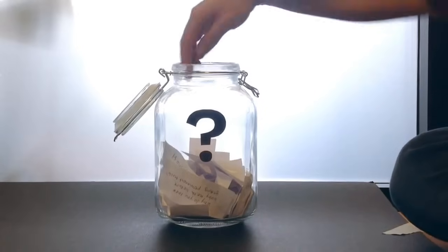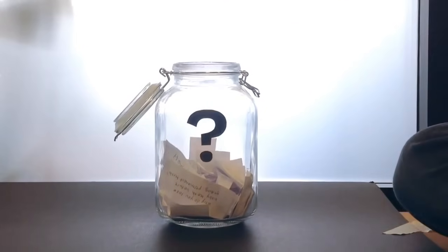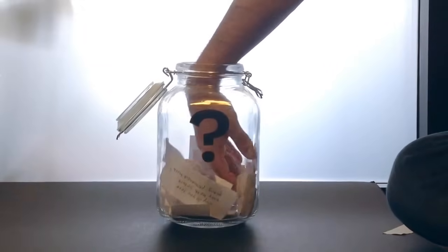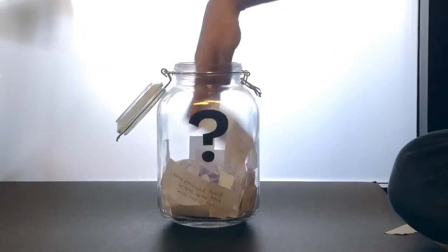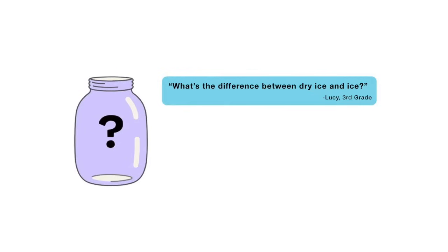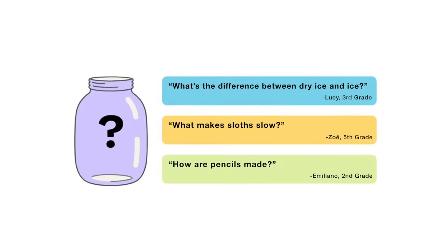That's all for this week's question. Thanks, Sanskridi, for asking it. Now, for the next episode, I reached into my question jar and found three questions submitted to me that I'm thinking about answering. When this video is done playing, you'll get to vote on one. You can choose from: What's the difference between dry ice and ice? What makes sloths slow? Or, how are pencils made? So submit your vote when the video's over. I want to hear from all of you watching. There are mysteries all around us. Stay curious, and see you next week.